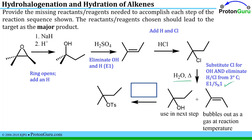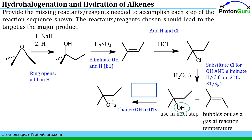The instructions note that one product bubbles out as a gas at reaction temperature, while the alcohol has a much higher boiling point due to hydrogen bonding, so it stays in the flask and is used in the next step. In the final step, all that happens is converting the OH into a tosyl group, accomplished with tosyl chloride and pyridine.